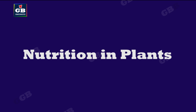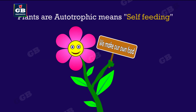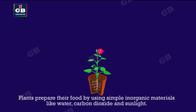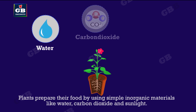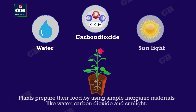Nutrition in plants is autotrophic, which means self-feeding. Plants prepare their food by using simple inorganic materials like water, carbon dioxide, and sunlight. This process is called photosynthesis.